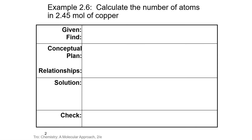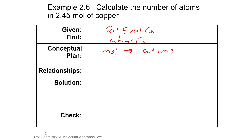Let's calculate the number of atoms in 2.45 moles of copper. We are given 2.45 moles, and we are trying to find the number of atoms. So we are going to take our moles and convert to atoms. A strange thing in chemistry is that we take a four-letter word and abbreviate it to three letters — so moles, M-O-L-E, is abbreviated M-O-L.